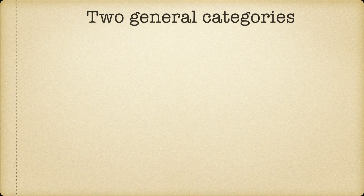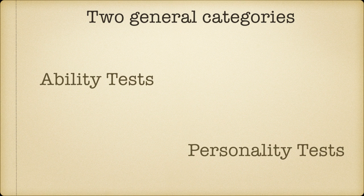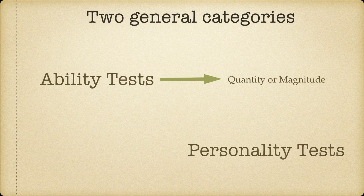All psychometric tests can be categorized into two general categories. The first category is ability tests and the second category is personality tests. The fundamental difference between those two is that ability tests measure the quantum or magnitude of psychological characteristics, whereas personality tests measure recurring pattern, clarity of preference or frequency of display of psychological characteristics. Ability tests are quite close to other kinds of tests that we see in our normal daily life, while personality tests are unique to the domain of social science.